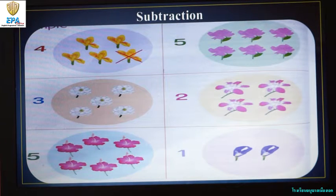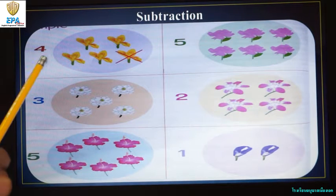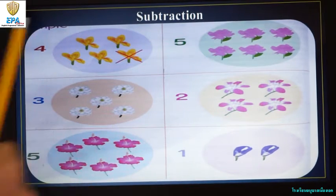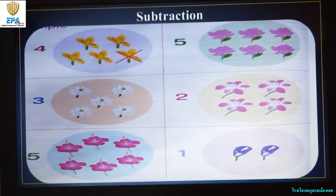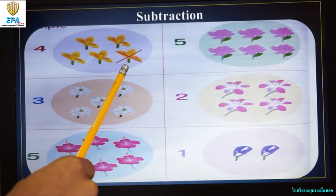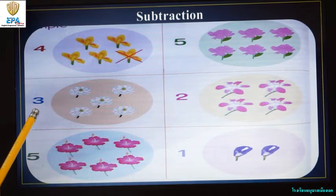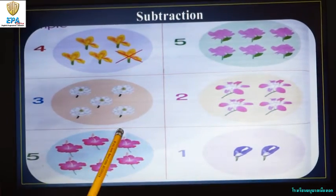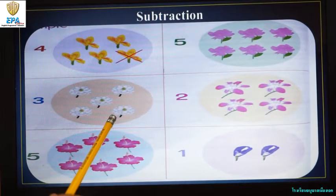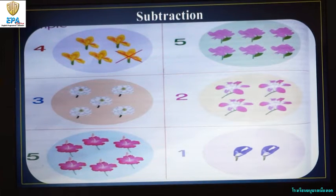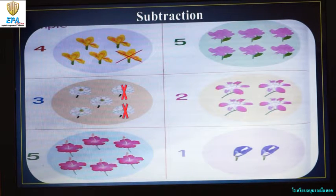Cross over the flowers to get the equal number as given. Example: this is number four, there are five flowers, so how many are we going to deduct to make it equal to four? Of course, one. Next, this is number three. There are five flowers. How many are we going to deduct to make it equal to three? Two, very good.